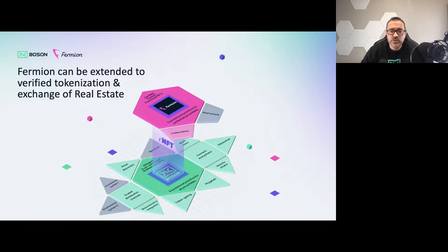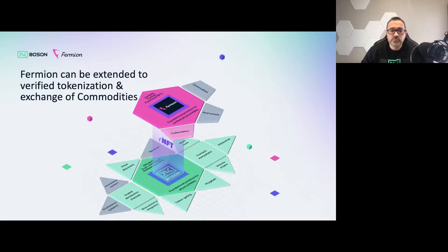If you were a real estate entrepreneur and you wanted to create a tokenisation application, you no longer need to build the underlying protocol. You can just take Fermion, plug in your assets, your verifiers, and your custodians, and away you go. Same with commodities — Fermion can be extended to handle commodities trading in a secure and verifiable way.